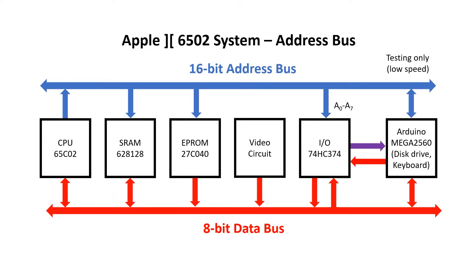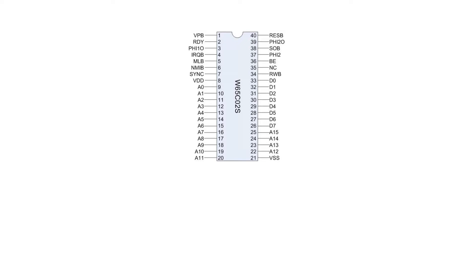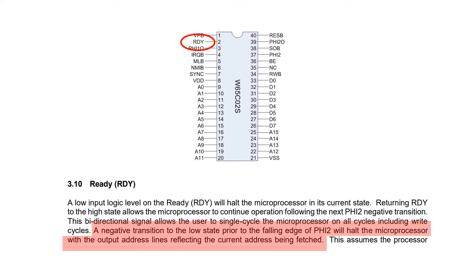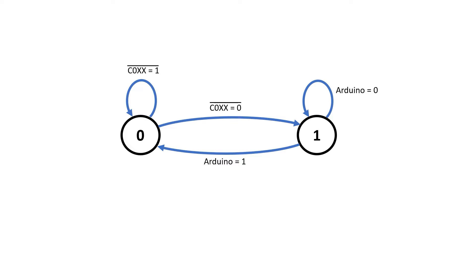One of the problems with the Arduino is that we don't know how long it's going to take to service a C1000 address request. Fortunately, the 6502 has a ready signal. A negative transition to the low state prior to the falling edge of clock will halt the microprocessor with the output address lines reflecting the current address being fetched. So what I need is a little state machine to manage ready. In state 0, ready will be high, and provided we don't see a C1000 address, it'll just stay in this state. But if our C1000 bar signal goes low, then we know we've hit a C1000 address and we transition to state 1. In state 1 we set ready low, this halts the CPU, and we stay in this state until the Arduino tells us to go back to the other state, which is the run state.